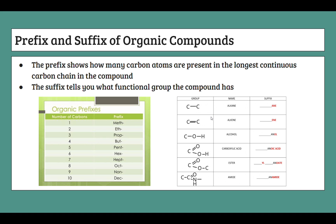Now for the suffixes — each suffix is unique for a different homologous series. For alkanes, the functional group is C–C single bond, and the suffix is -ane. So for a one-carbon alkane, we combine the prefix meth- with the suffix -ane to get methane. You just take the prefix and suffix, put them together, and it's very simple.